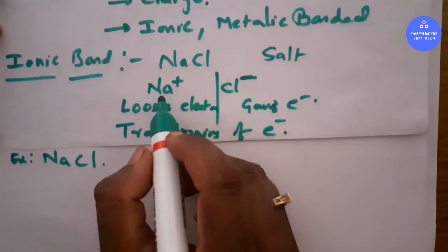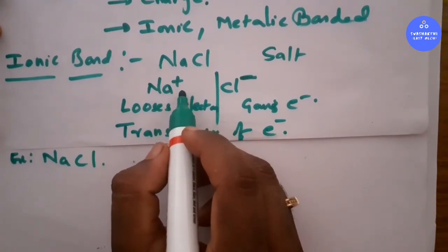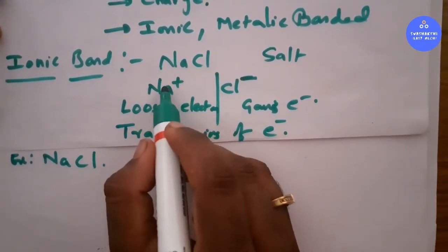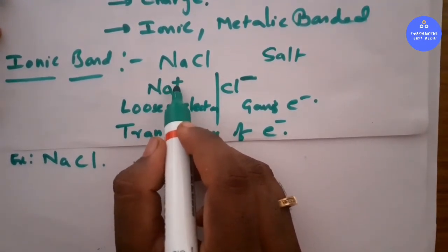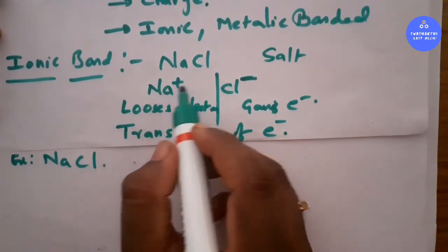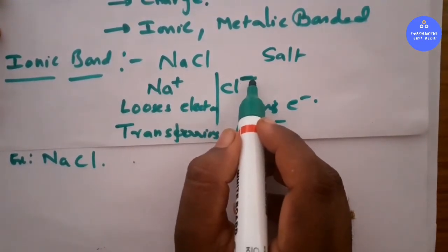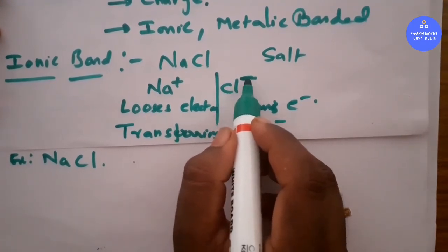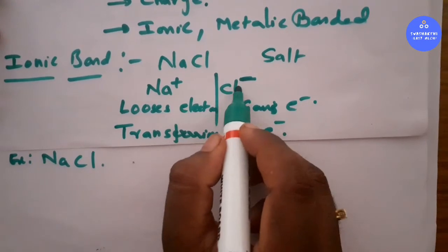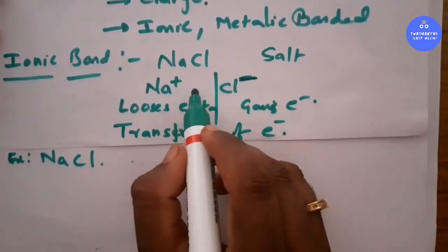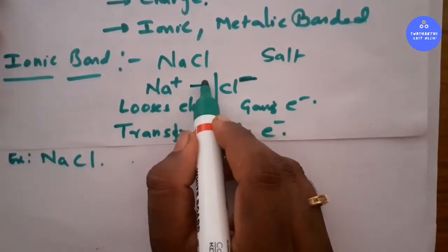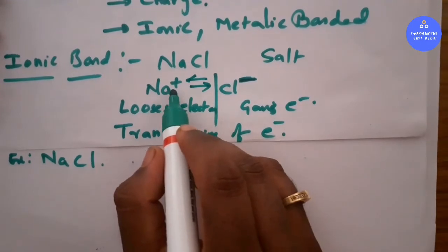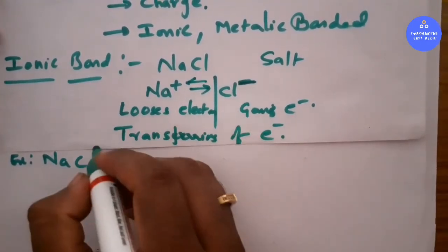Ionic bond is the bond formed due to transferring of electrons between two atoms. Sodium has one extra electron so it donates that electron, becoming Na⁺. Chlorine wants one electron, so it gains it from sodium, becoming Cl⁻. There is then a bond between Na⁺ and Cl⁻ — that is the ionic bond.